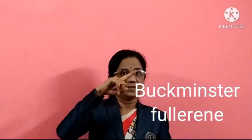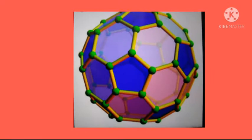In fullerenes, carbon atoms are arranged in a spherical form. This buckminster fullerene, also called the buckyball, contains 60 carbon atoms and that is why it is also called carbon-60. Depending upon the number of atoms, they are larger or smaller.